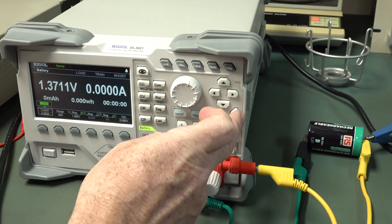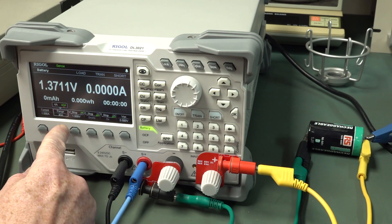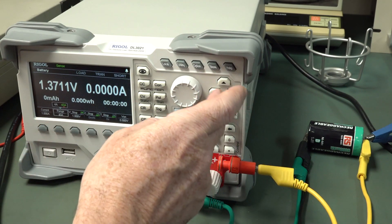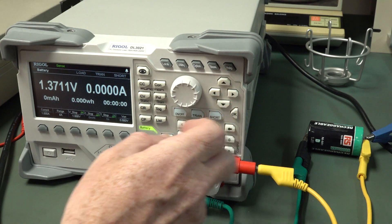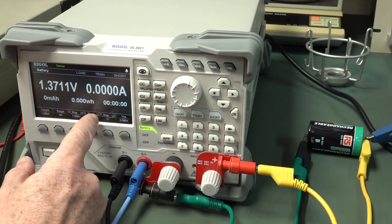So I'll set the current there to 1 amp, 40 amp range. We'll go to the 4 amp range, a bit more accuracy. Okay, 1 amp, 1 volt stop, 0 milliamp.